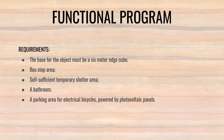These are some of the requirements for places of shelter and refuge: they must be located in a space that is easily identifiable and recognizable even in low visibility; there must be a break between the building and the forest; roofs must be made of non-combustible materials; exterior walls must be fire-resistant or have fire-resistant coatings; ceilings should be as high as possible; and there must be a water point. Some requirements of the functional program are: the base must be a 6-meter-edge cube, there must be a bus stop area, it must be self-sufficient as a temporary shelter, there must be a bathroom, and a parking area for electrical bicycles powered by photovoltaic panels.